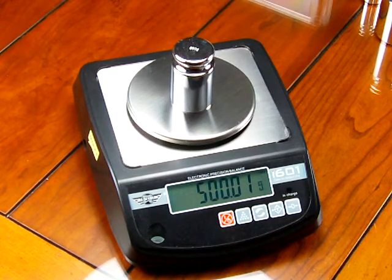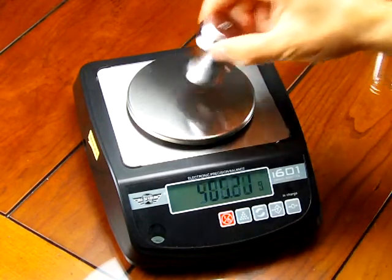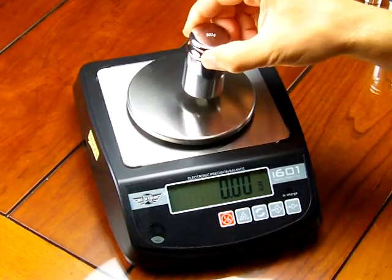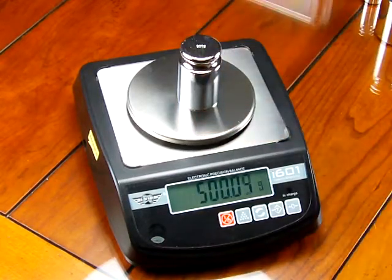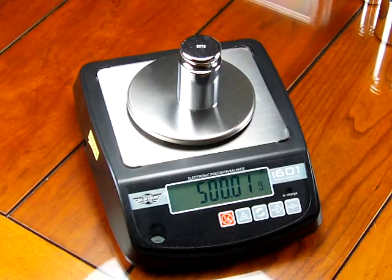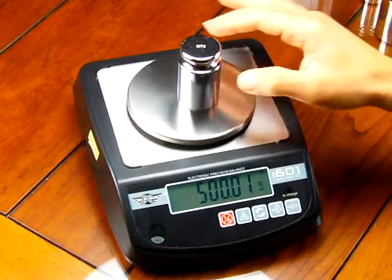So again, the MyWay i601, you can see, is a great little scale. It's extremely affordable. If you do purchase the calibration weight, you'll have a very accurate and precise scale. We want to stress on the i601,